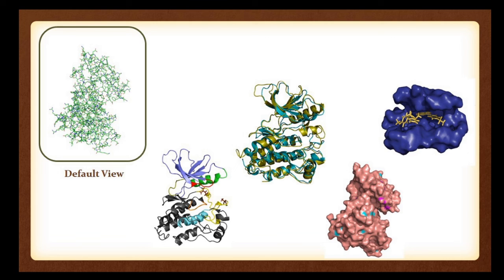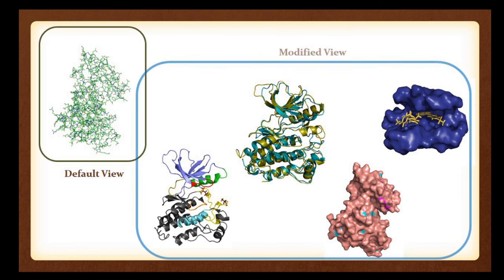Once we open a biomolecule in PyMOL, there is a default view as shown in the encircled area. From there, we can visualize the same protein or biomolecule in different forms, as shown in the modified view. These are the different ways to visualize the same biomolecule properly. We will now go through a demonstration of how to visualize a protein in a better way.